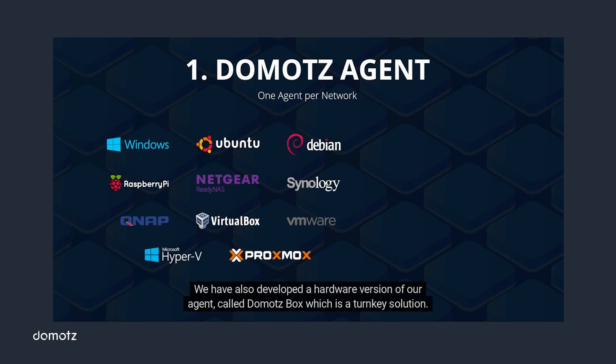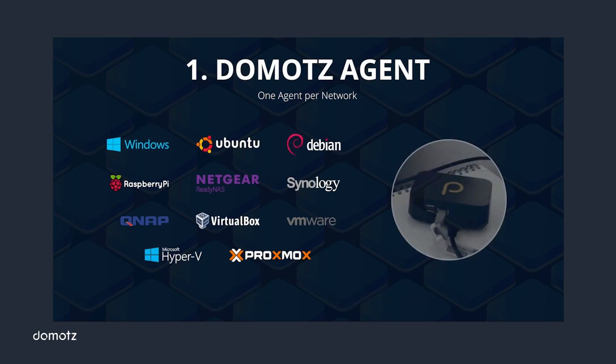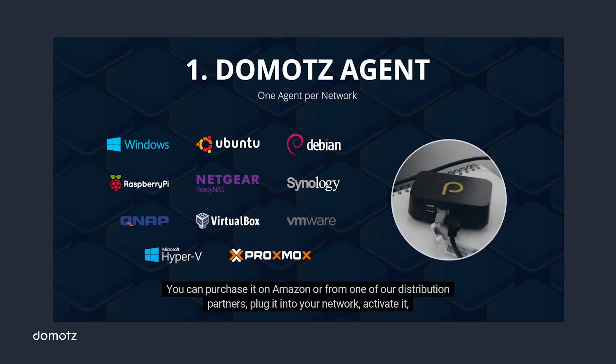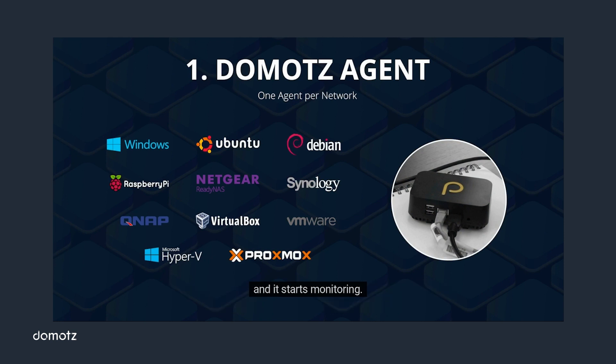We have also developed a hardware version of our agent called Domotes Box, which is a turnkey solution. You can purchase it on Amazon or from one of our distribution partners, plug it into your network, activate it, and it starts monitoring. We also distribute Domotes boxes directly if you are purchasing in quantities of 25 or more.